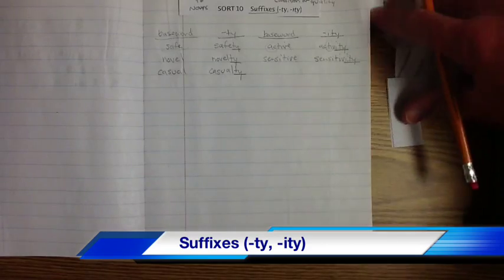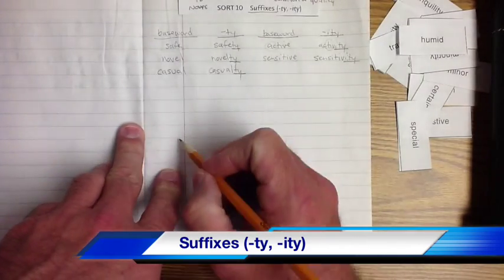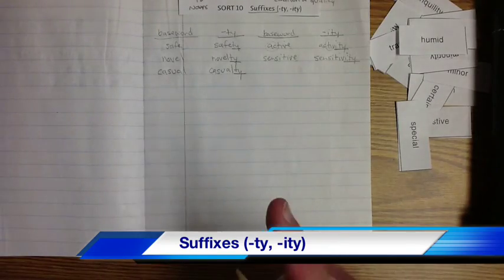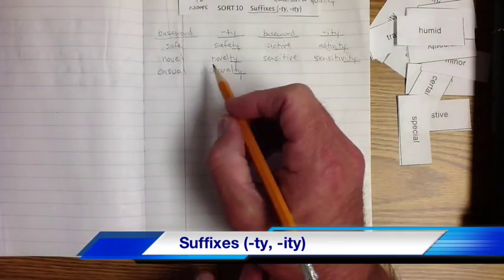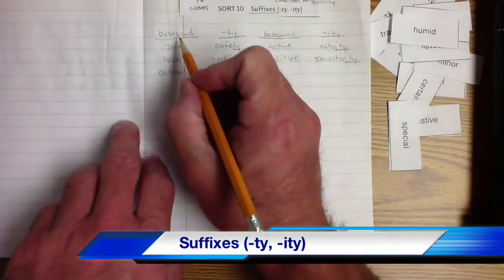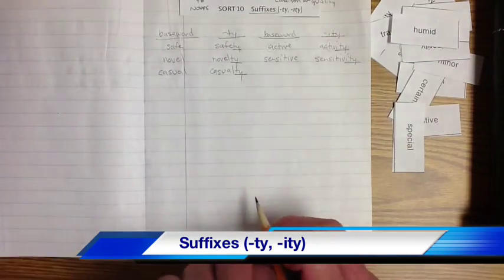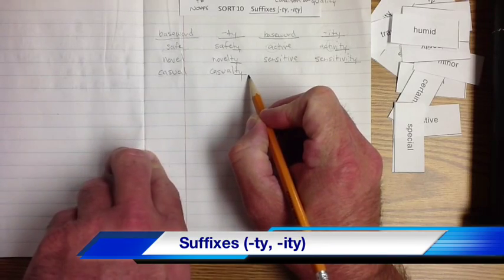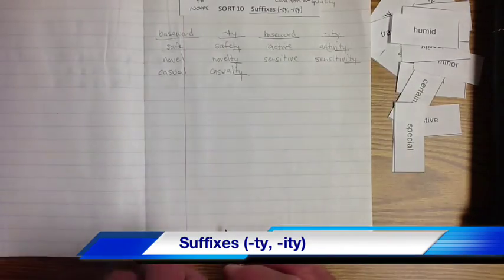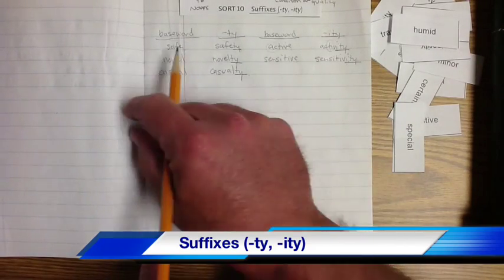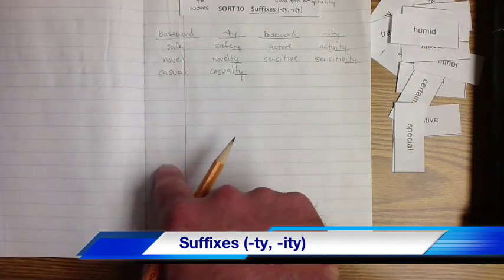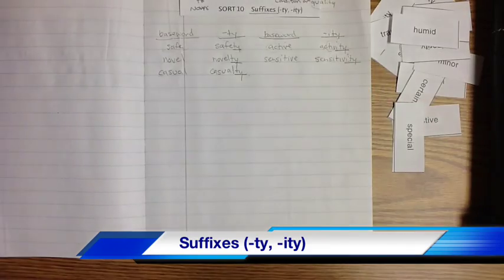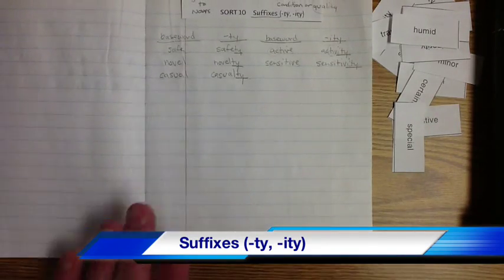So now what I need you to do is I need you to take the rest of these words over here. I need you to say them and write them where they need to be. We underline the suffix, but I need you to do one more thing, is I need you to take two of these words in here, and I need you to look them up. I need one word in the T-Y, and one word in the I-T-Y, and I need you to look up what the base word means, and I need you to look up what the word is with the suffix on it. One in T-Y, one in I-T-Y. Write whatever words you come up with last. Write those two words in. Write those two words in. Write the definitions below it. I want to know what you come up with. I want you to see if it comes up with the condition or quality of that adjective. All right? Okay. Get her done.